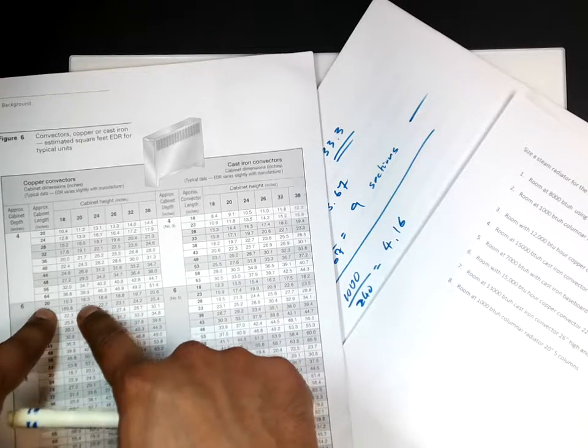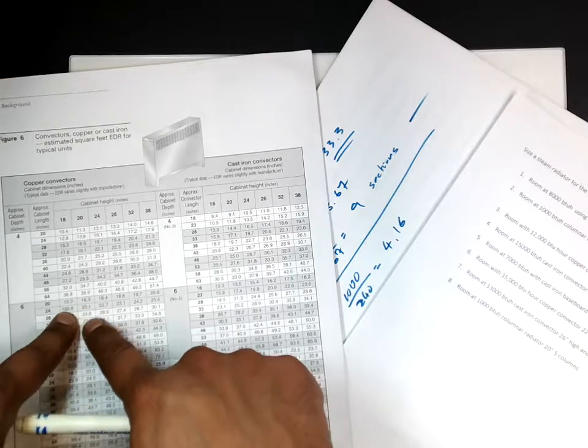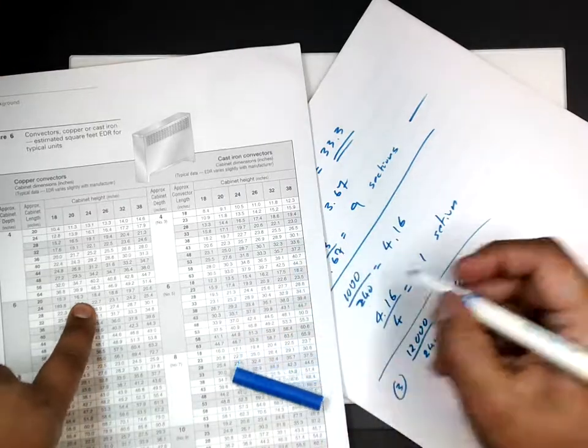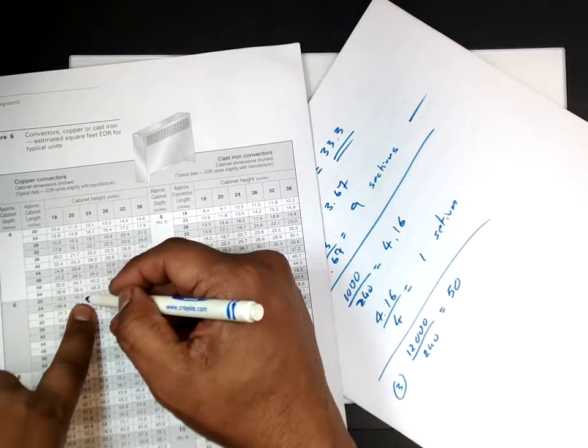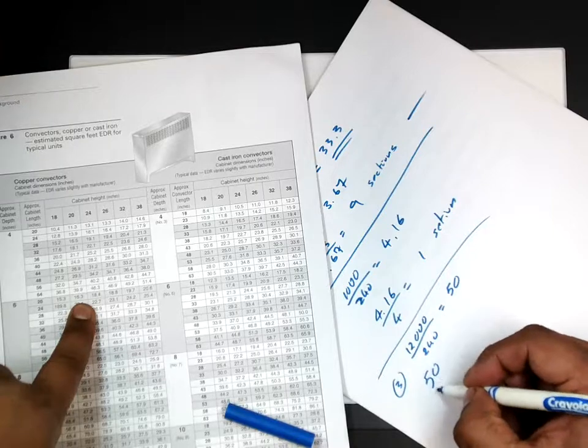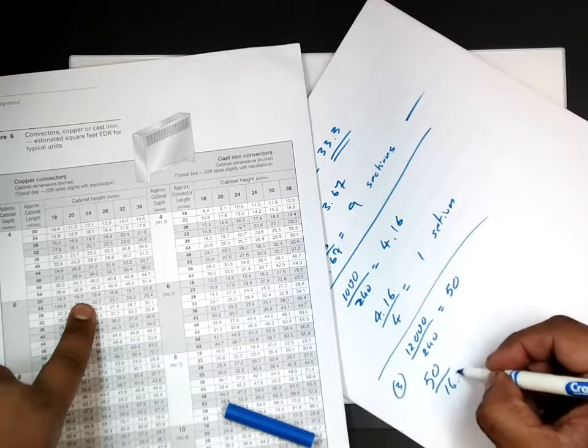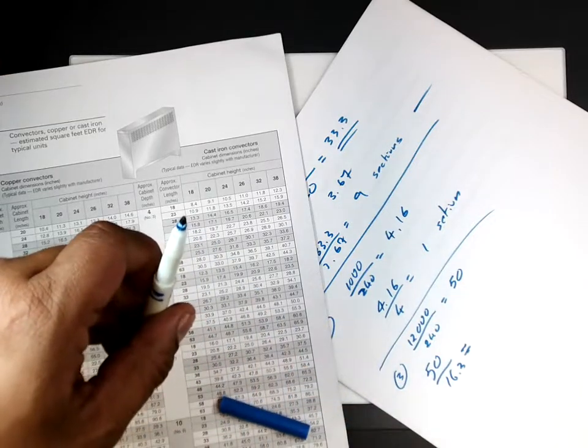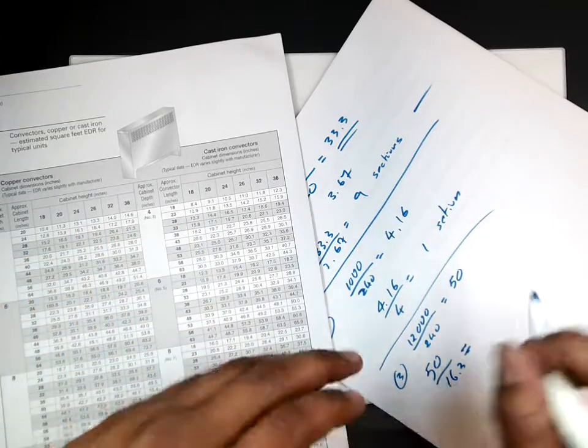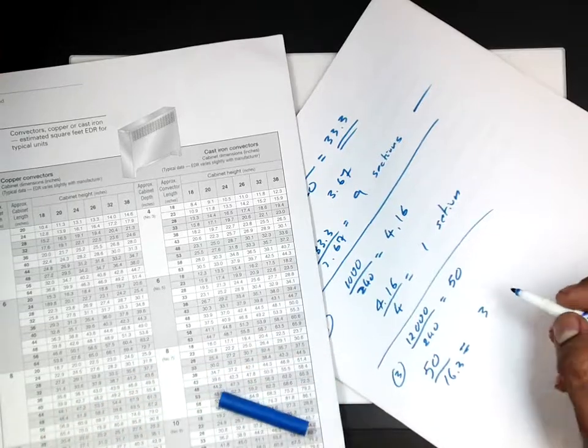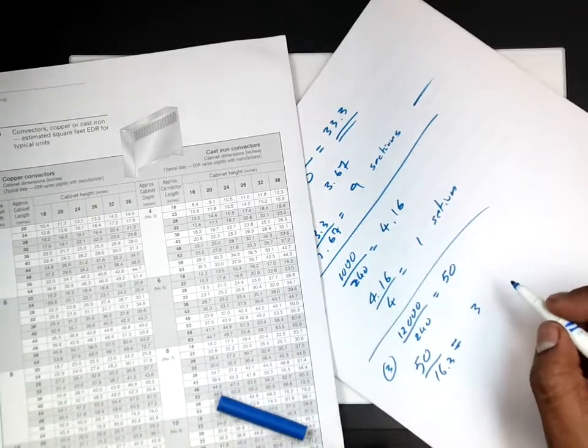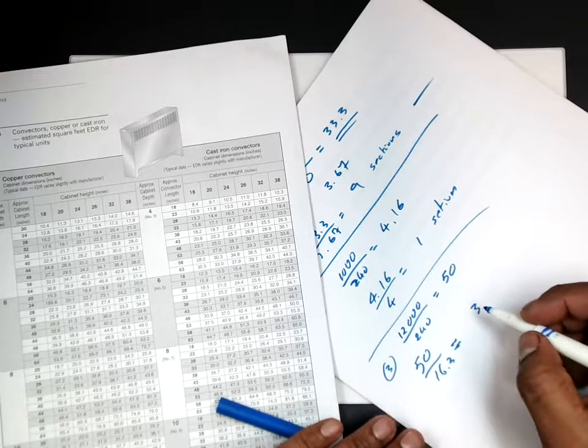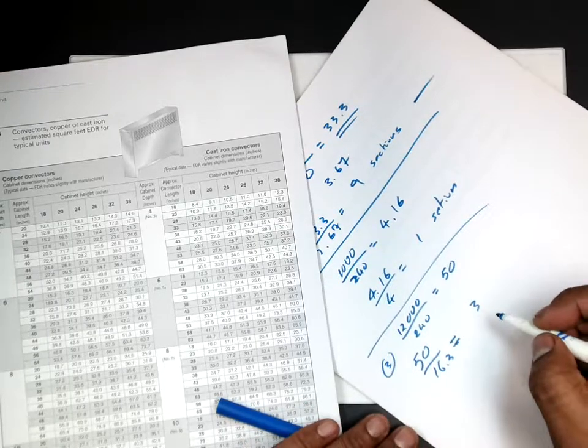Again, I'll get a smaller one because it's going to be cheaper. You can go higher, it doesn't matter. So I'm going to pick the first one and from here, if you can see the EDR is 16.3. 50 over 16.3. That will give me three sections. That's the inches. That's the EDR. I'm going to get three of those, three sections.